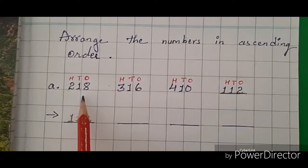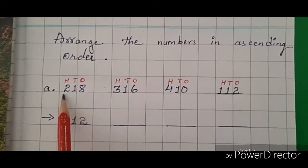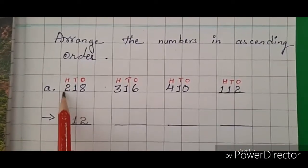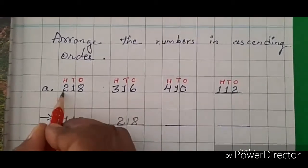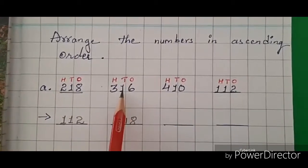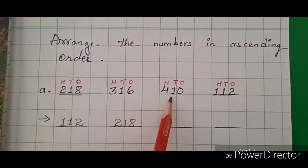Yes, 2. So the answer is 218. Now in the next two numbers, the smallest number is 3 in the hundreds place.